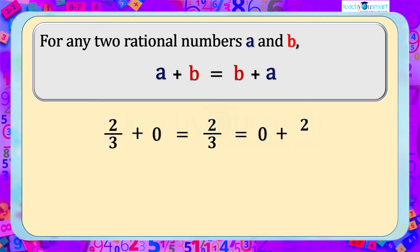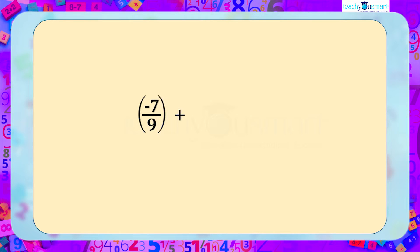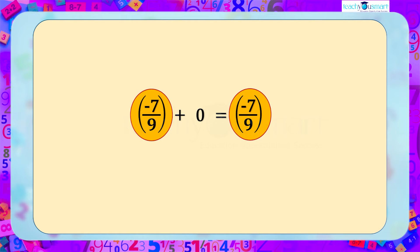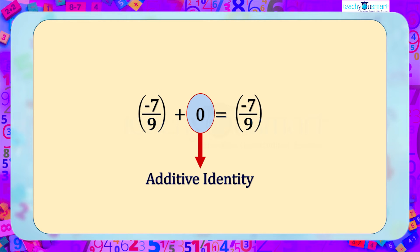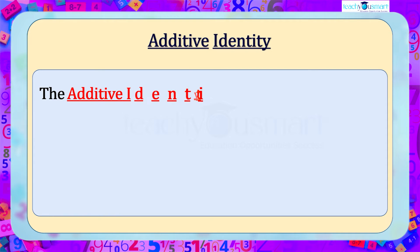For example, two by three plus zero is equal to two by three, which is equal to zero plus two by three. Here, two by three and zero are elements in the set of rational numbers. When we add two by three to zero we get the same number itself. If we add minus seven by nine to zero, then we get minus seven by nine — here also we get the same number itself.